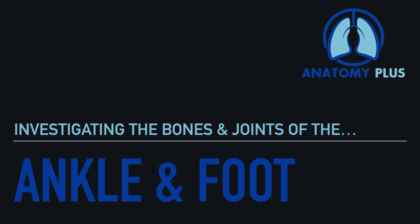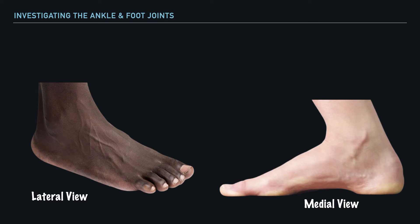Hi everyone, it's Dr. A, and in this video we'll be discussing the bones and joints that form both the foot and ankle. It's helpful to note that we have a total of 26 bones that make up the foot, and these bones collectively form an arch that is typically visible from a medial view. It's our collection of these 26 bones in the foot that connect with the rest of the body because of its articulation with the tibia and fibula.